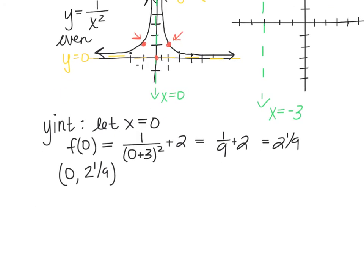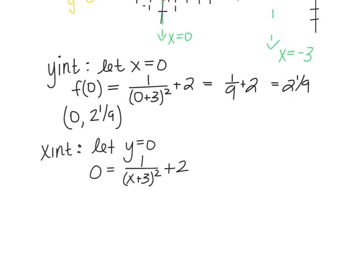Now if I move on to my x-intercept, I find the x-intercept always by letting y equal 0. So that means I'm substituting in 0 for f(x). 0 equals 1 divided by (x plus 3) squared plus 2, and that means I'm going to have to solve this equation. Let me review the algebra with you.